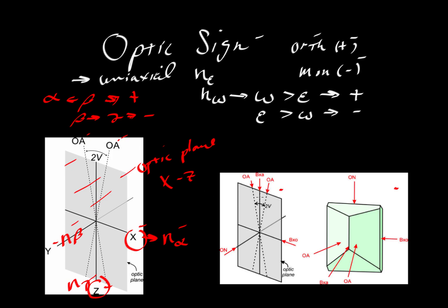But we can also look at this. These two optic axes are defined by an acute angle, and that acute angle is 2V. We can also have an obtuse angle, which represents the complement to that acute angle.